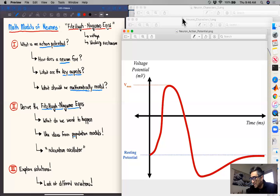As we'll see, we'll borrow some ideas from population models. The equations that we're going to derive will fall under what we call a relaxation oscillator type model. Finally, in the last video, we're going to explore some solutions. Check out these videos.